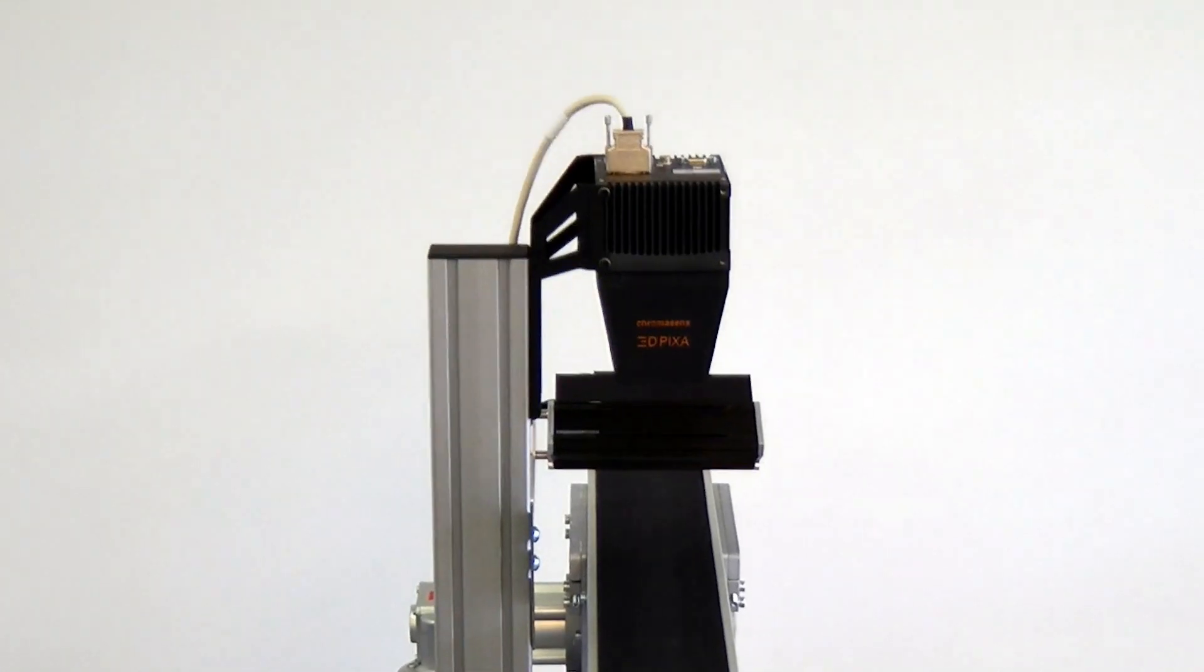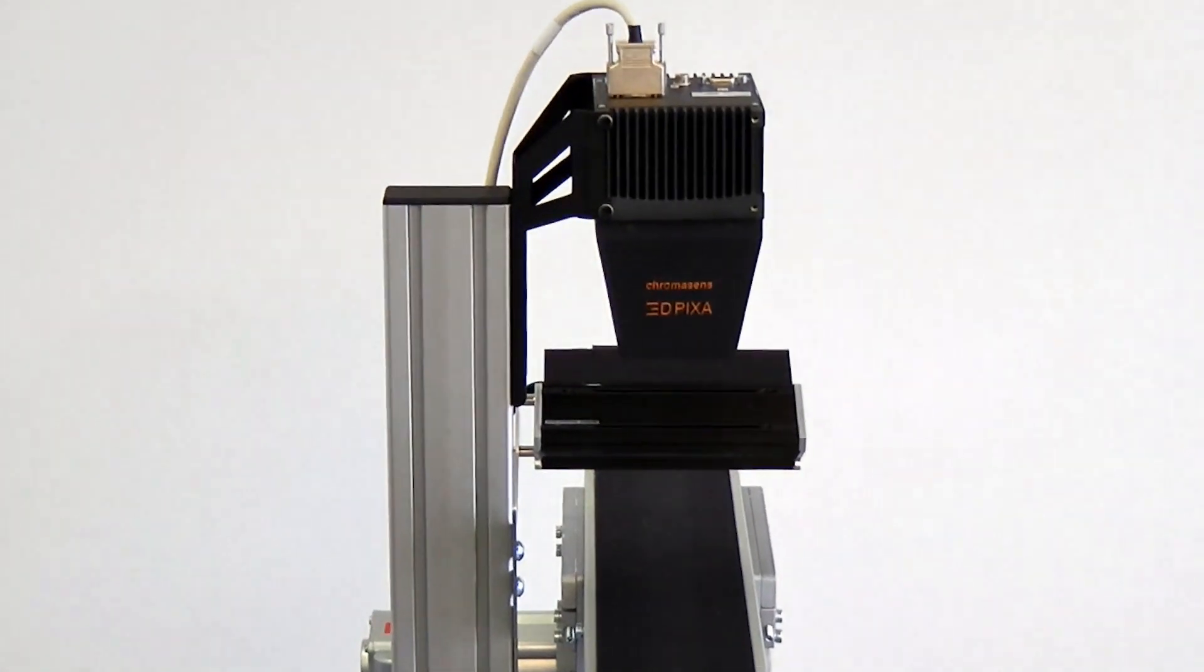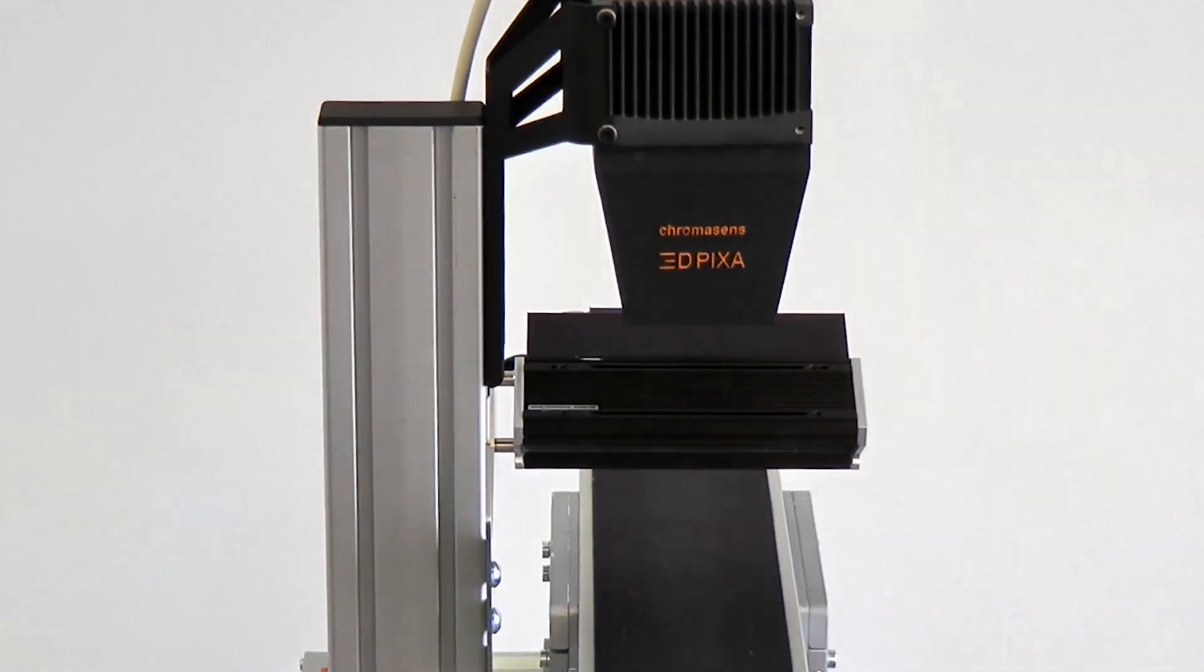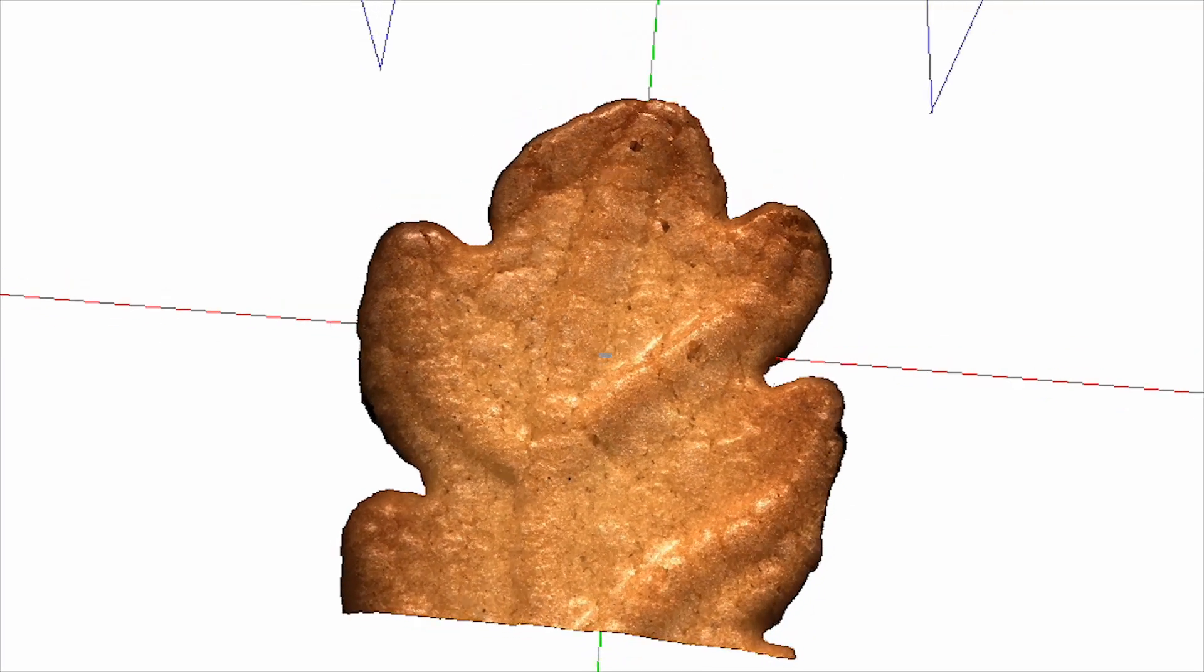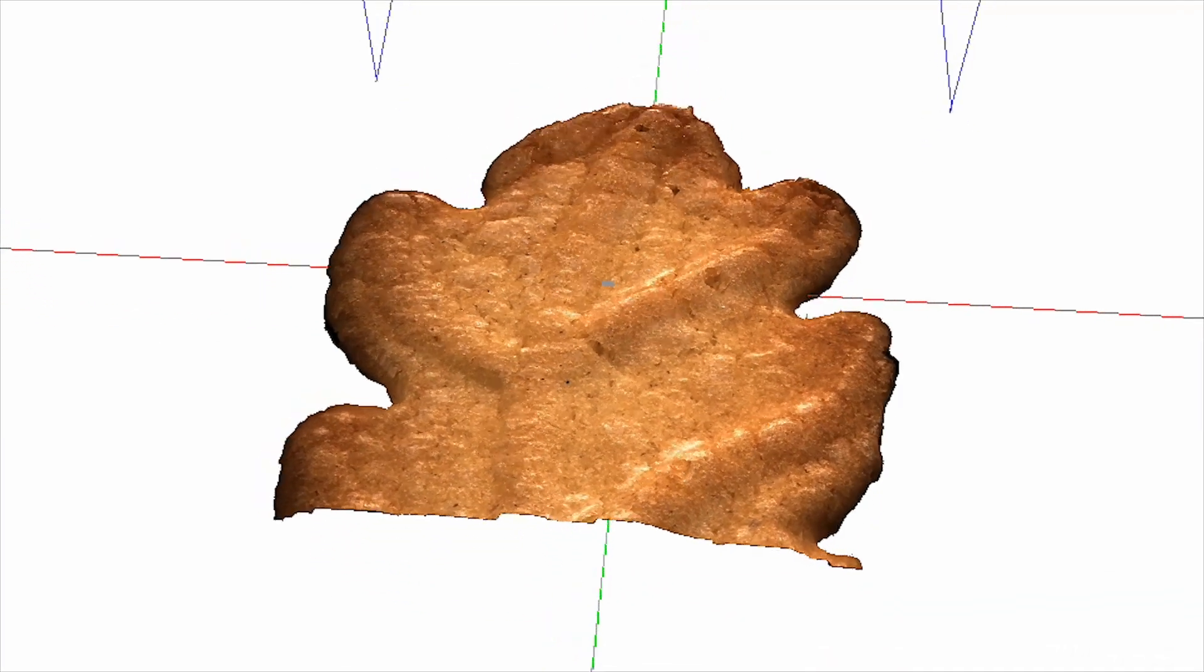The new ChromaSense 3D-PIXA stereo camera yields the advantages of line-scan cameras for the third dimension. It captures the surface in color and 3D with high resolution and high speed.